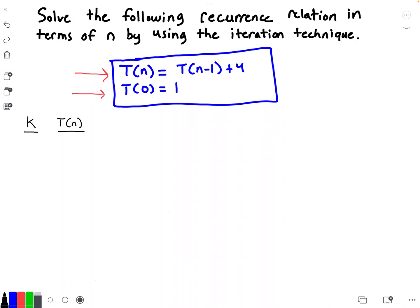To start, we'll begin with our first iteration, so under K I will put the number 1. The function at this first iteration looks like what we already have stated in the problem, so I'm going to rewrite it: T(n) is equal to T(n-1) plus 4.